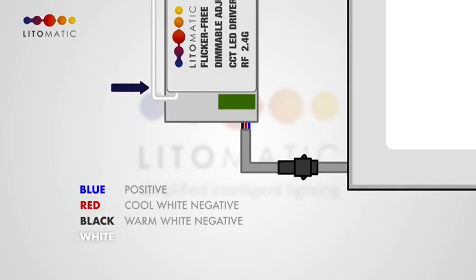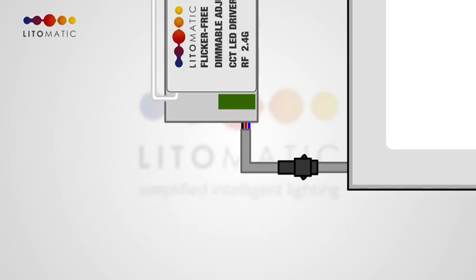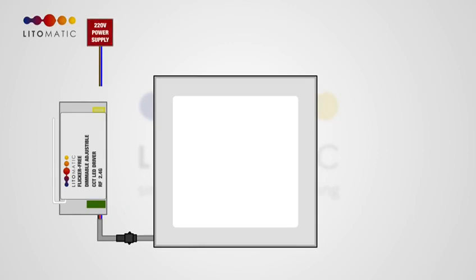On the other side, there is a white 2.4G radio frequency receiver antenna. Once this is done, connect 220 volts power supply to the circuit.